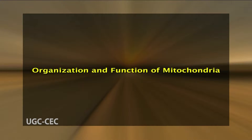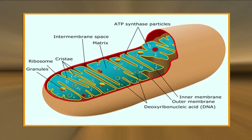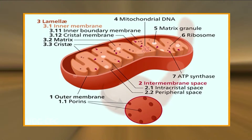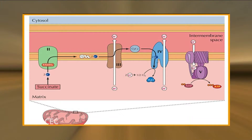The organization and function of mitochondria: mitochondria are surrounded by a double membrane system consisting of inner and outer mitochondrial membranes separated by an intermembrane space. The inner membrane forms numerous folds called cristae, which extend into the interior or matrix of the organelle. Each of these components plays distinct functional roles, with the matrix and inner membrane representing the major working compartments of mitochondria. The matrix contains the mitochondrial genetic system, as well as the enzymes responsible for the central reactions of oxidative metabolism.